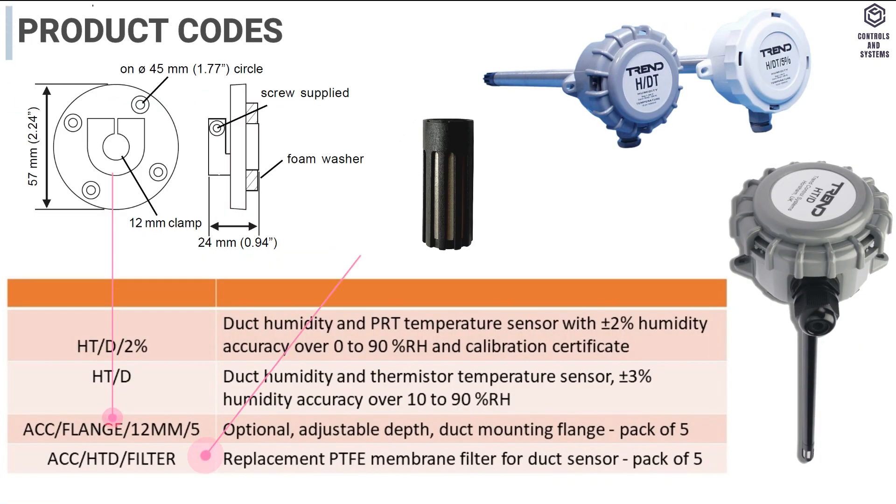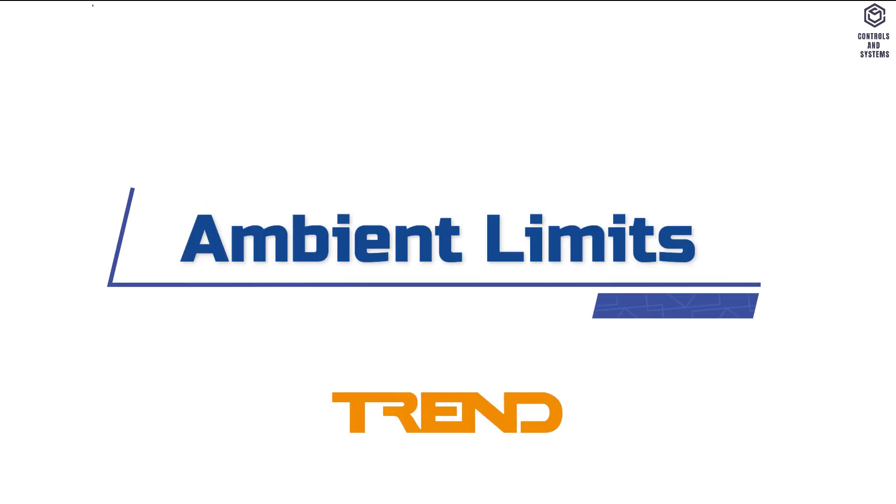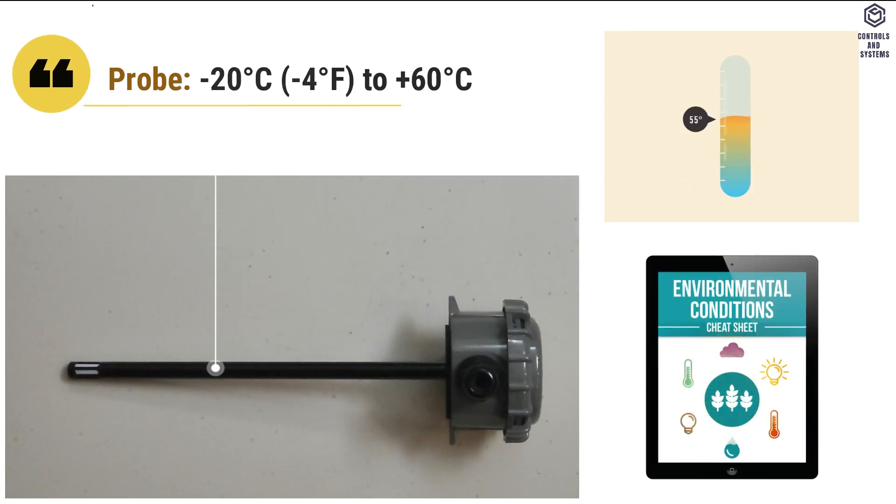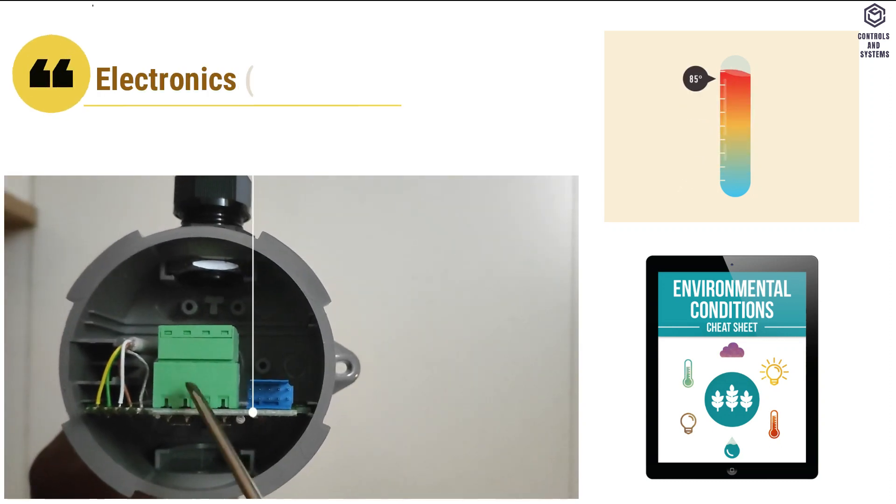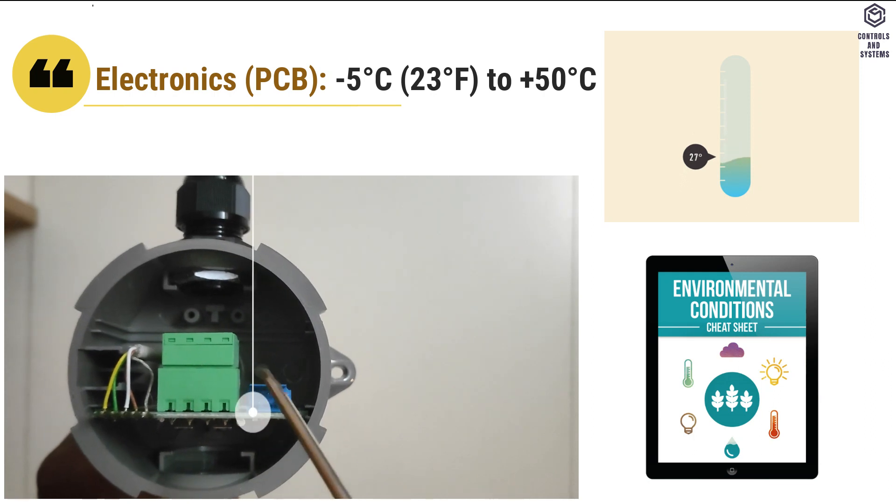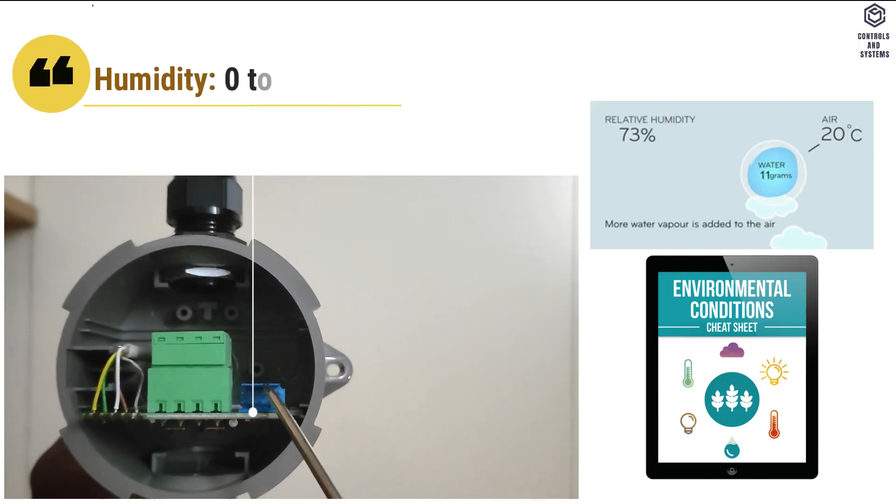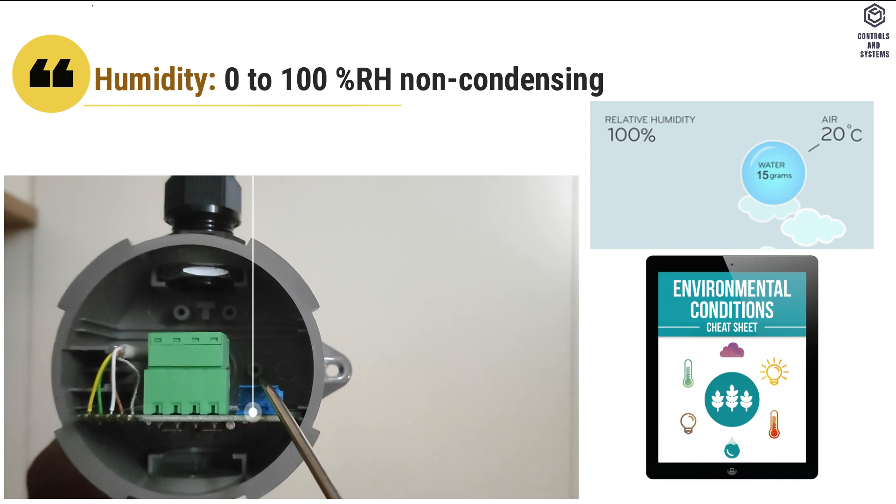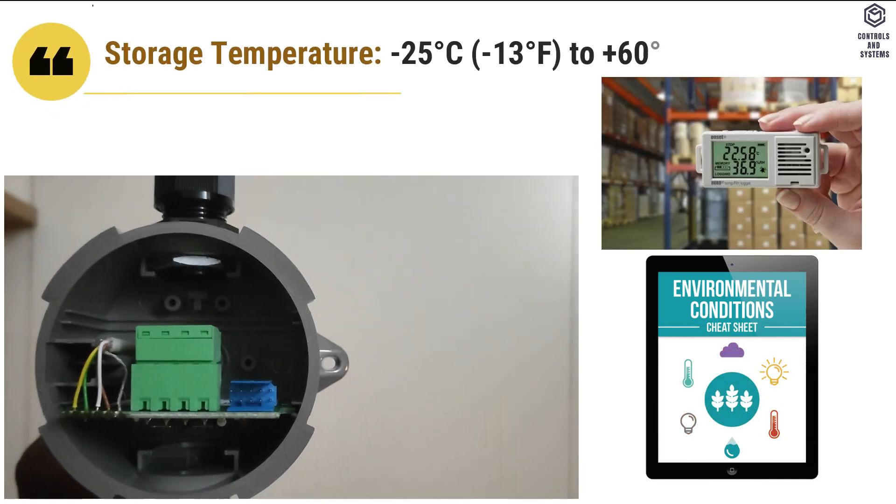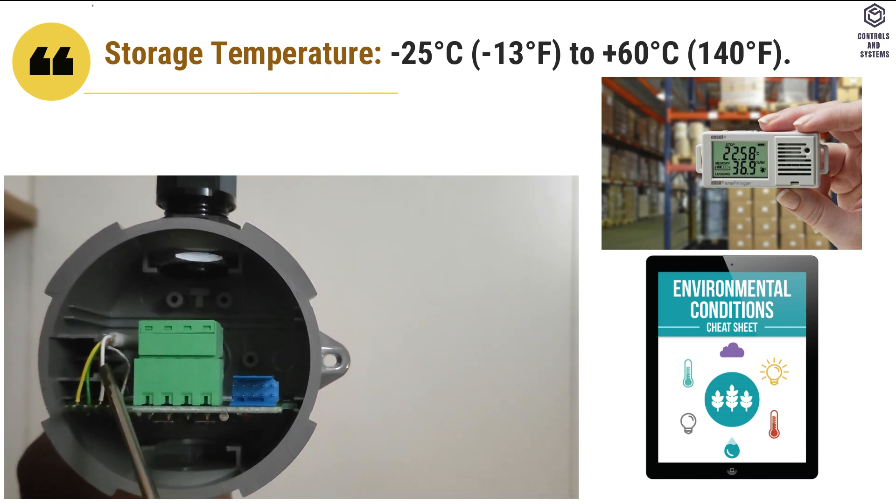Product code and specification are indicated in the table column. Working Ambient Limits: Probe Temperature is -20°C to +60°C. Electronics Temperature is -5°C to +50°C. Humidity is 0 to 100% RH non-condensing. Storage Temperature is -25°C to +60°C.